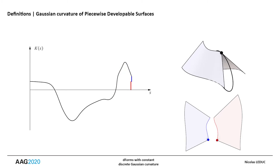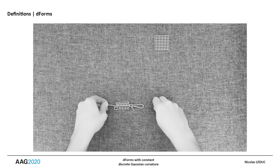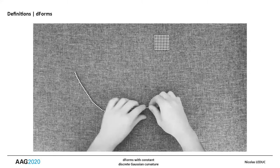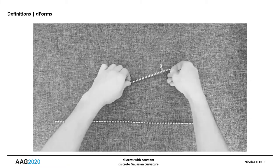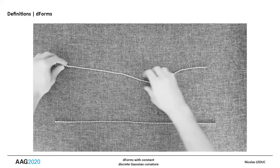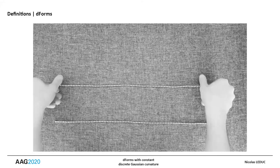In our example, the angle of the seam is always oriented downwards. Intuitively, the Gaussian curvature is positive when the osculating circle of the seam is oriented in the same direction, and negative otherwise. As said before, we use a particular class of surfaces for the investigation of semi-discrete shapes with constant Gaussian curvature: the D-forms.